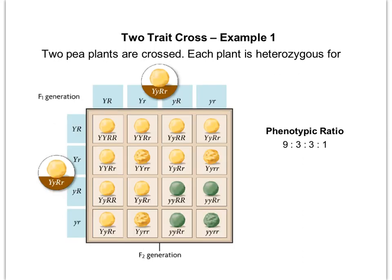Here's our Punnett square once it's been fully crossed. We're not going to look at the genotypic ratio because there are a lot of different genotypes — each box can be a different genotype. So typically with dihybrid crosses, we're only going to look at the phenotypic ratio.